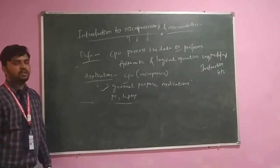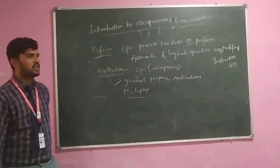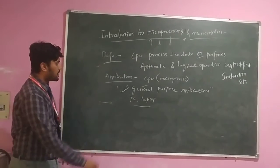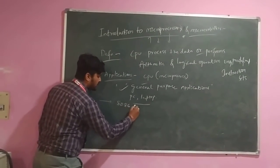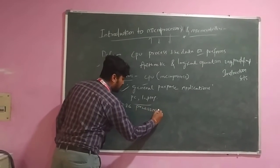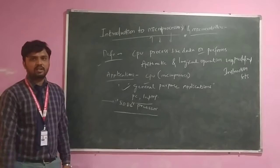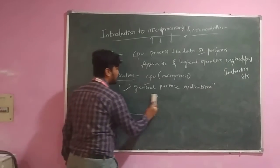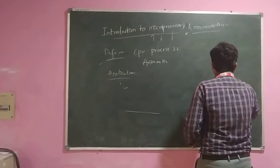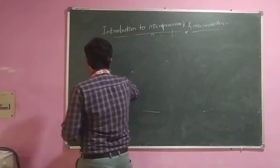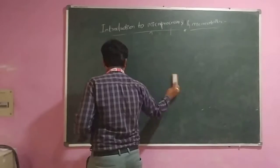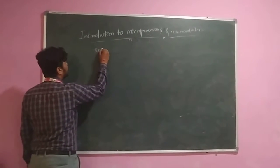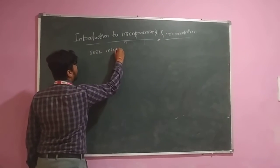Coming to microprocessors, we have different variations — like the electronic chip 8085 and 8086. In our subject, we will study the 8086 microprocessor. The processor performs arithmetic and logical operations according to predefined instruction sets and the input given by the user. Let us look at some basics of the 8086 microprocessor.